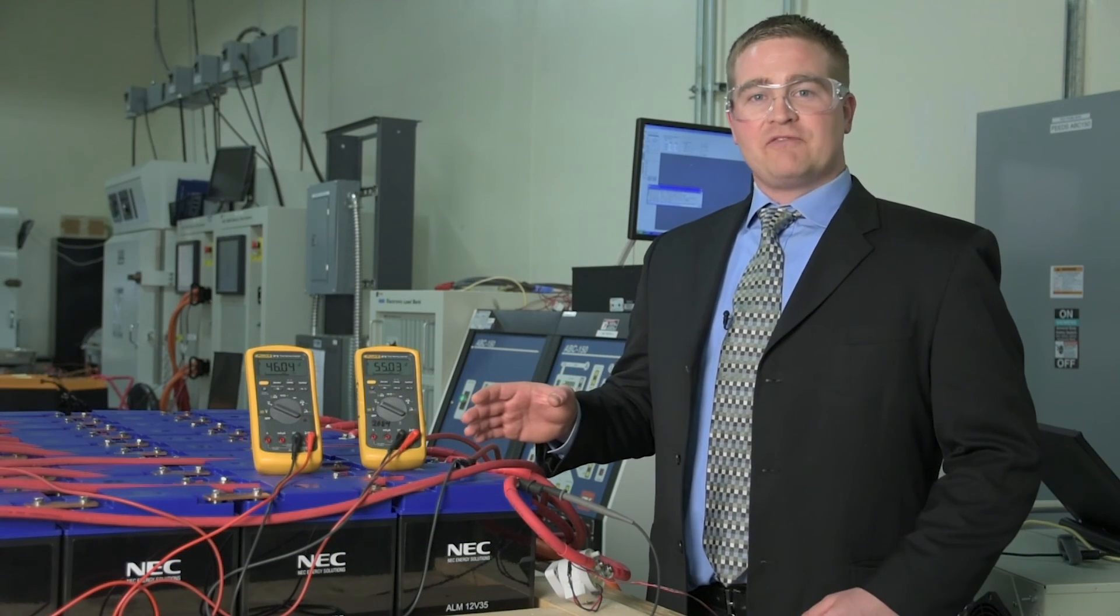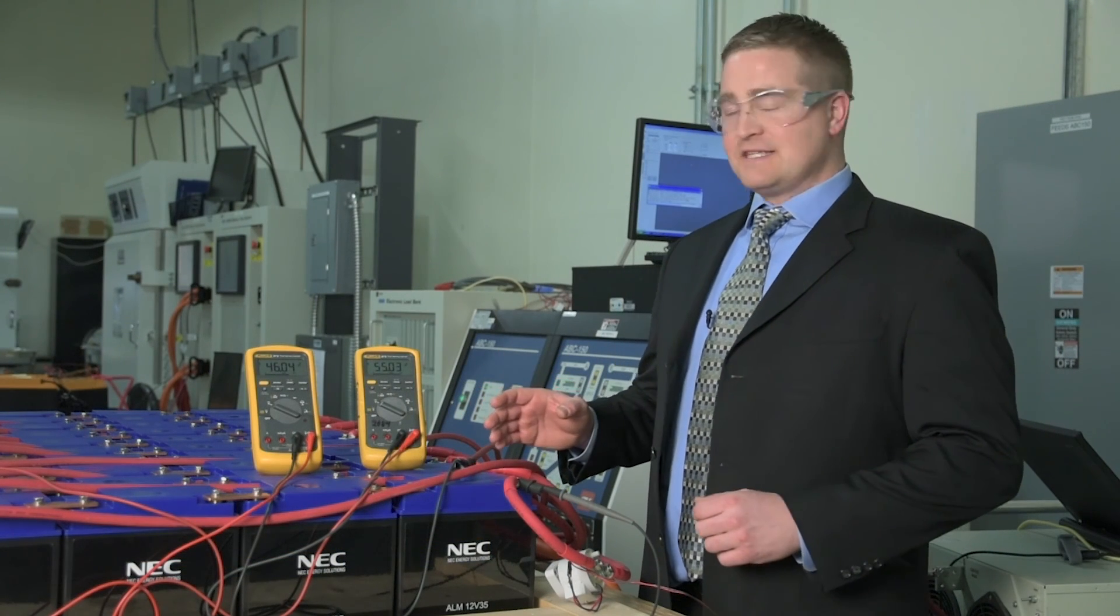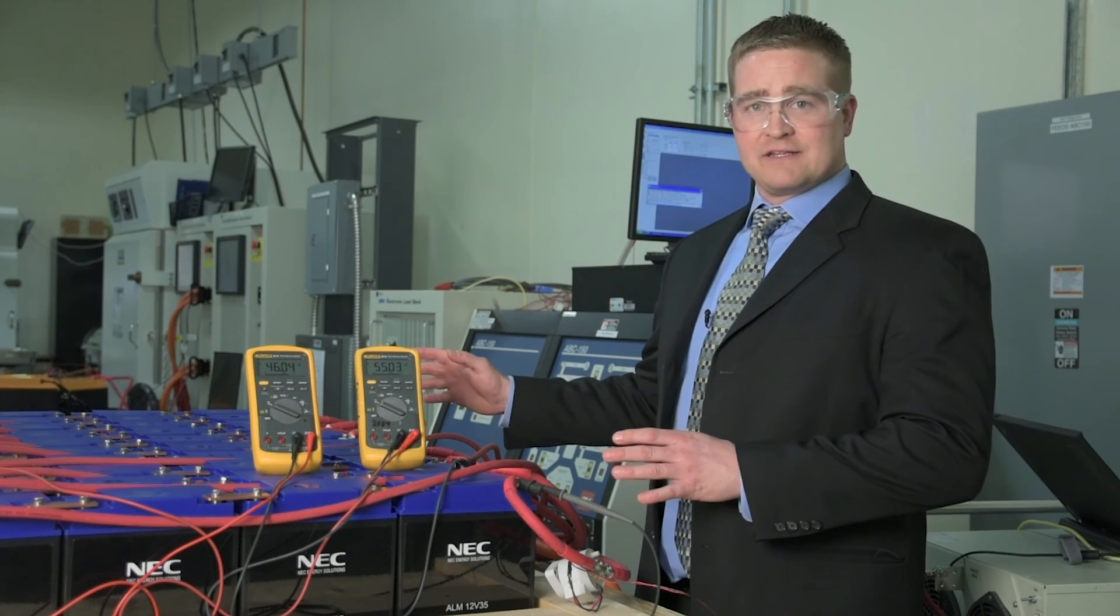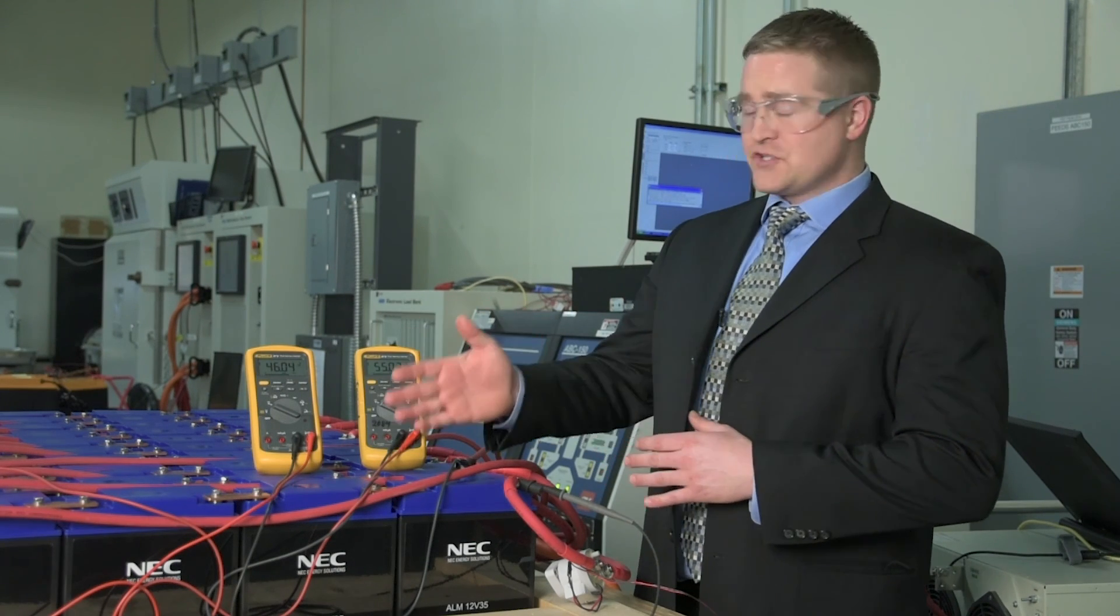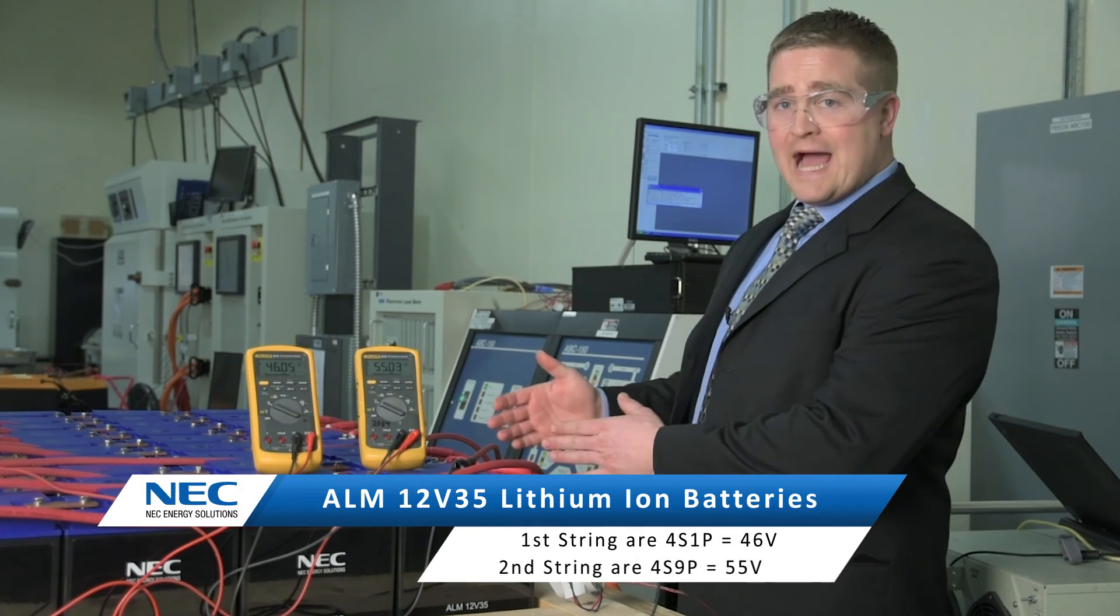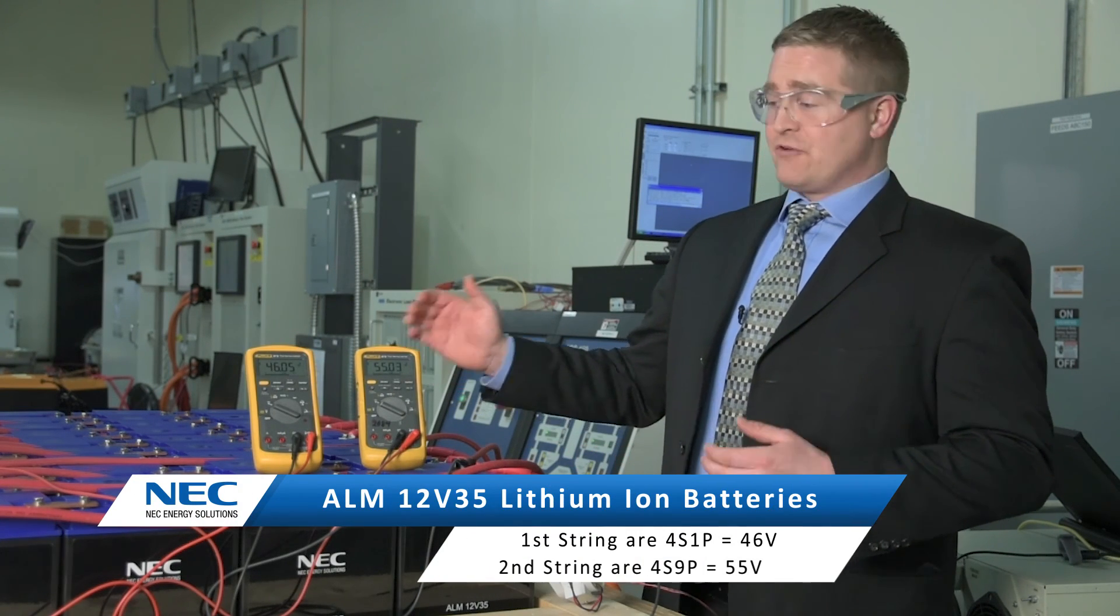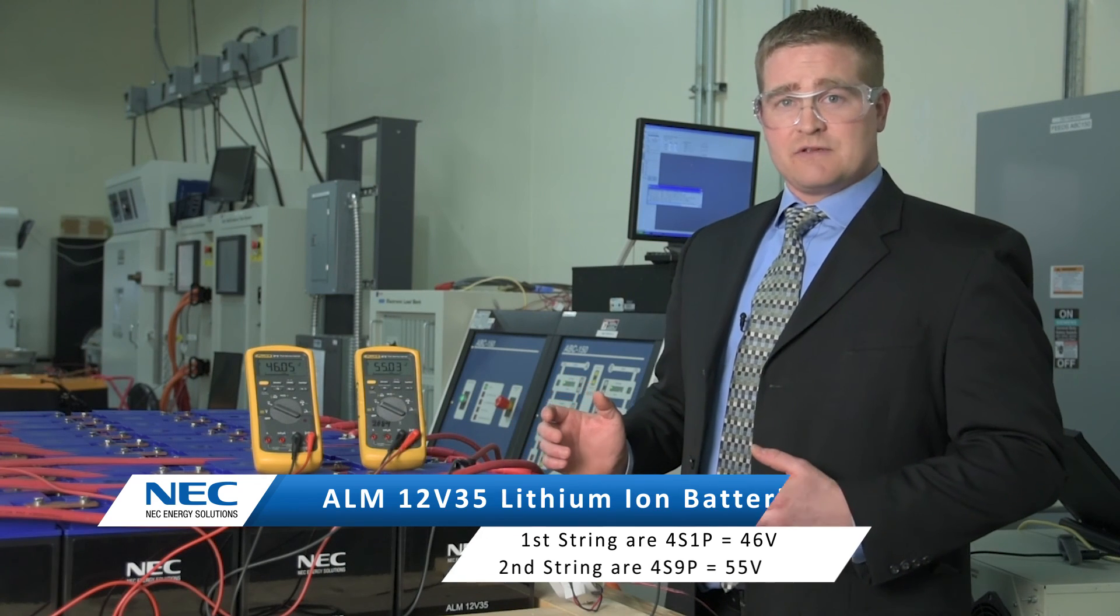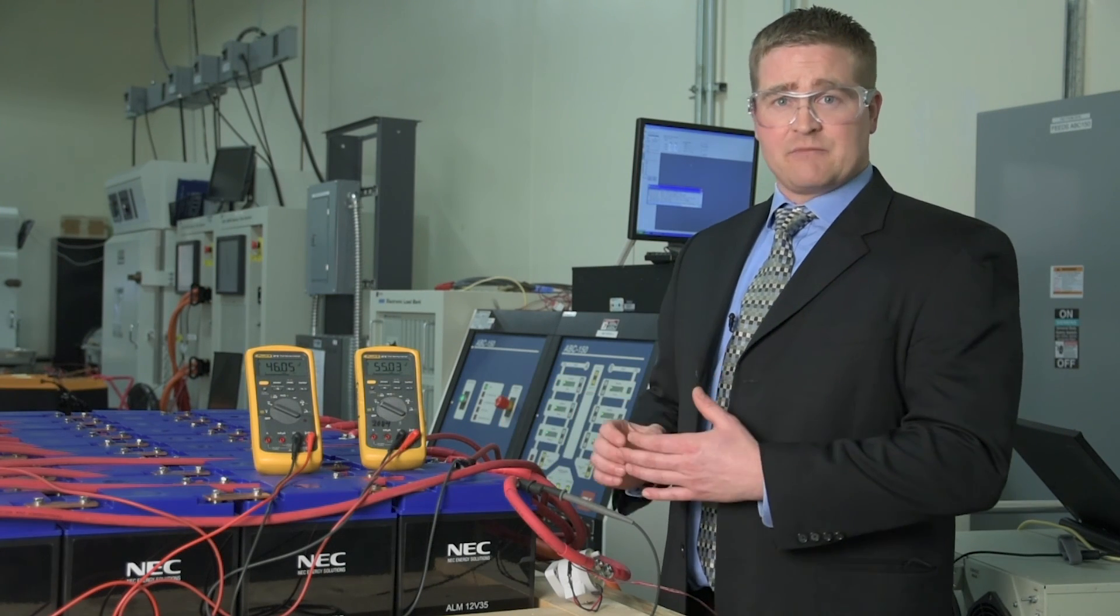The features of the ALM 12V35 make it very easy to integrate into larger arrays like this one here. This first string of batteries is at 46 volts and the other 9 in parallel are at 55 volts. For traditional battery systems that would be a problem to connect them together.